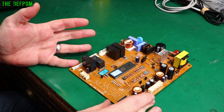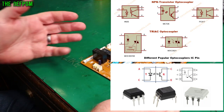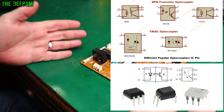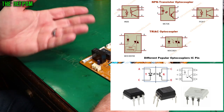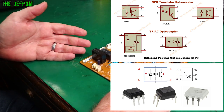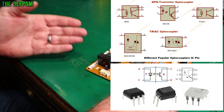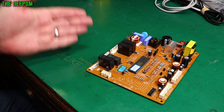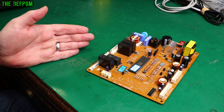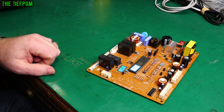There are lots of different versions of optocouplers — lots of different variants of pinouts, different specs for voltages, gain ratios. There's also a spec called the CTR, current transfer ratio, which is a relationship between the input current of an LED on the optocoupler and the output of the transistor.